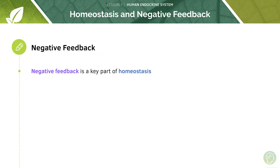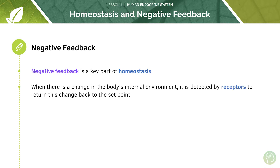So first of all let's look at what negative feedback actually is. It forms a key part of homeostasis — remember homeostasis is the maintenance of a constant internal environment in your body. Negative feedback is the way in which homeostasis is maintained. When there is a change in your body's internal environment, this change is detected by receptors in order for your body to return back to the set point. There's always a set point, whether you're talking about temperature, pH or blood glucose, and if your body deviates from that set point, receptors detect the change and initiate an effector response that drives your body's environment back towards that set point.